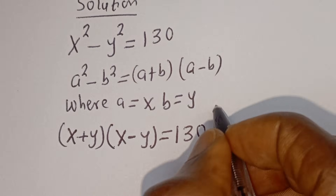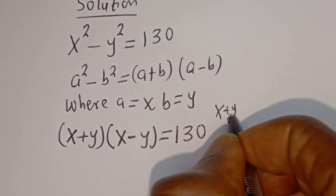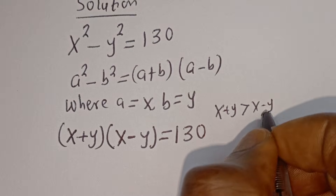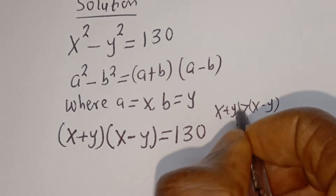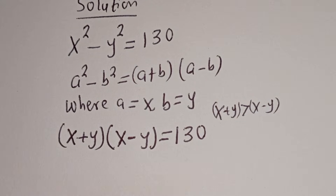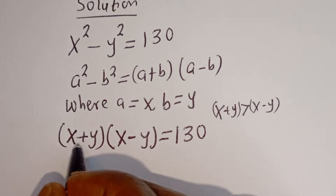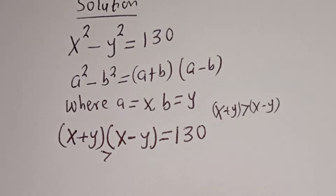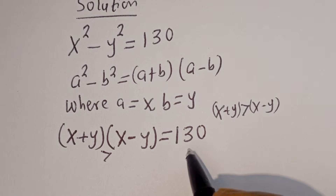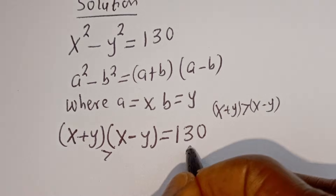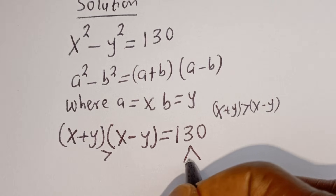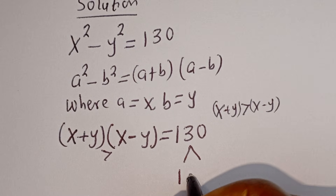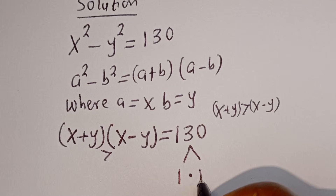Now, X plus Y is greater than X minus Y. Therefore we look for the factor pairs of 130. 130 is a product of 1 multiplied by 130.